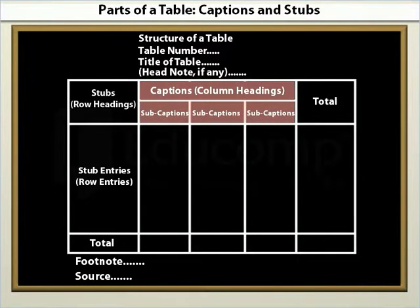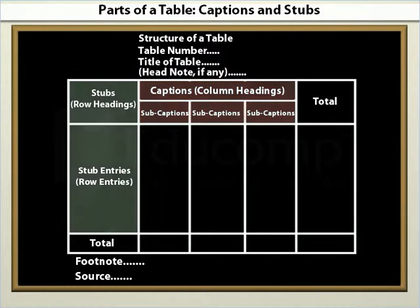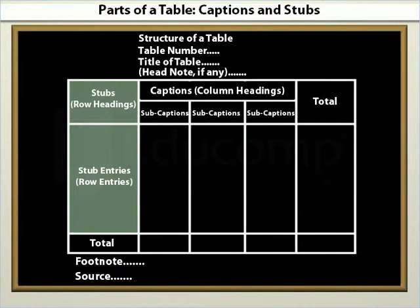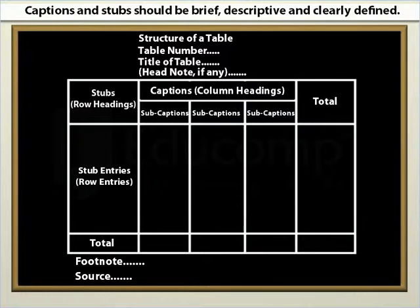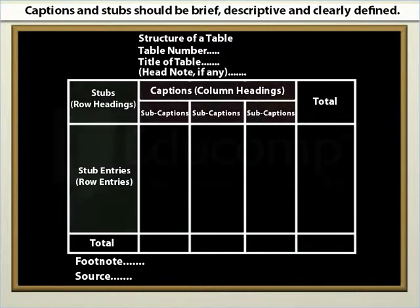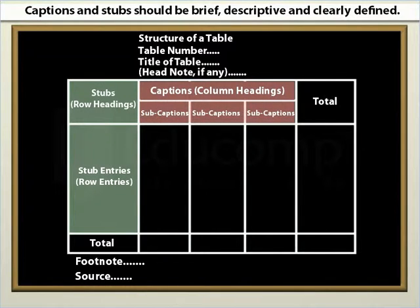Captions are the headings given to the vertical columns while headings given to horizontal rows are called stubs. Both captions and stubs should be brief, descriptive and clearly defined.